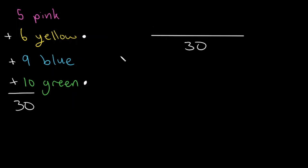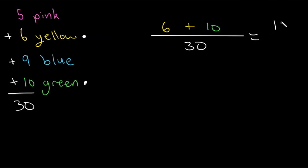So now we want to know what is the likelihood of this marble being yellow or green. So let's put the number of yellow marbles and add that to the number of green marbles. Our desired outcome is yellow or green, which is going to be 6 or 10 — one of these 6 yellow marbles or one of these 10 green marbles. So 6 plus 10 is 16, divided by 30. We can divide both by 2 and get 8 over 15. So the likelihood of getting yellow or green is 8 over 15.